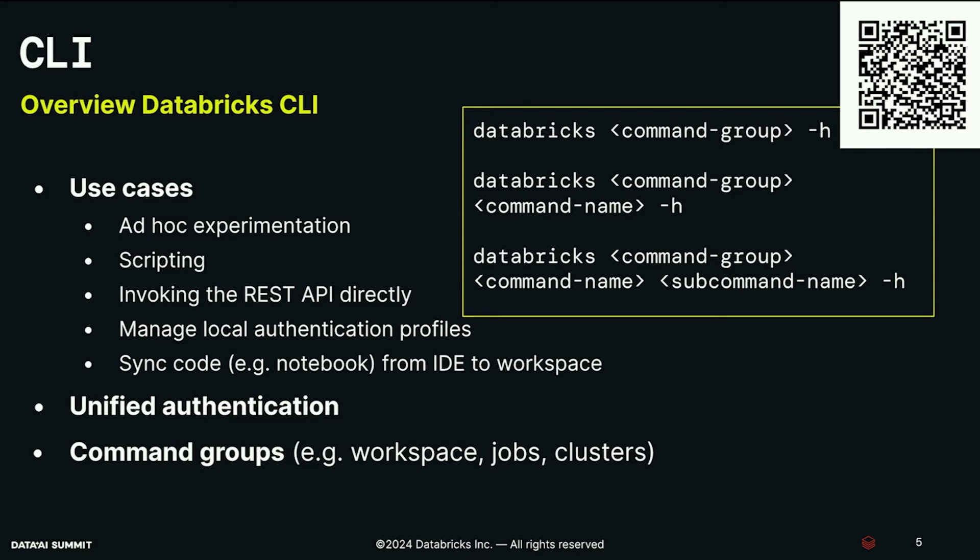The CLI has command groups — essentially a set of related commands and subcommands. We have them for topics like the workspace, workflows, and compute. We also have a really great command line help: if you use the Databricks command group with the help flag, it will tell you what you can do and how you can use them. It's a great resource if you're getting started.